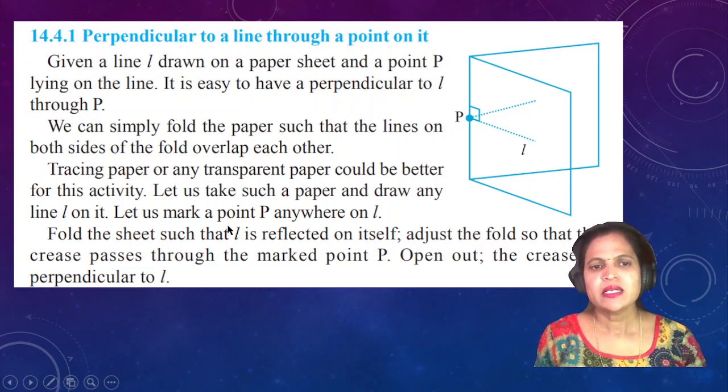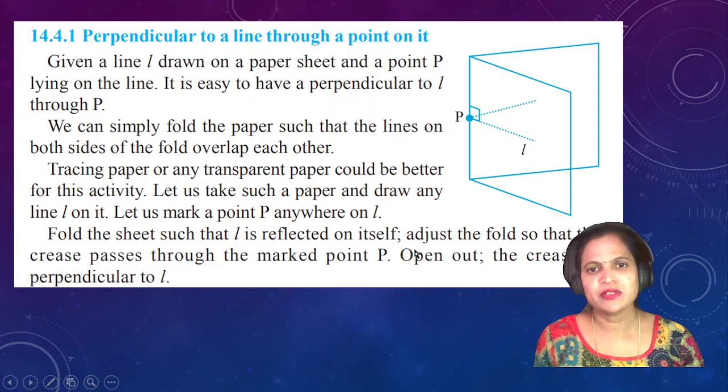Let us take such a paper and draw any line L on it. Let us mark a point P anywhere on L. Fold the sheet such that L is reflected on itself. Adjust the fold so that the crease passes through the marked point P.